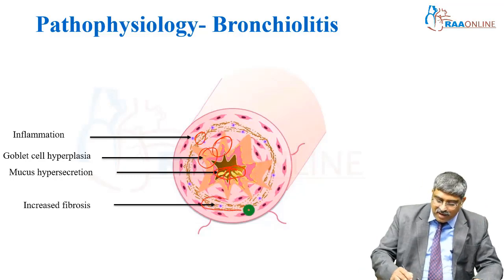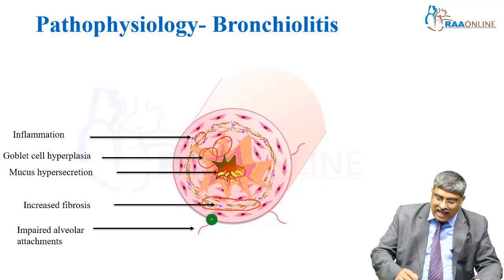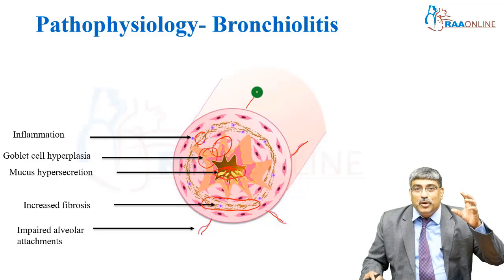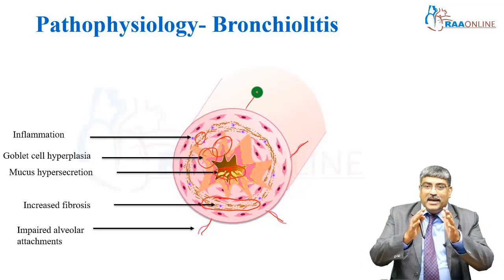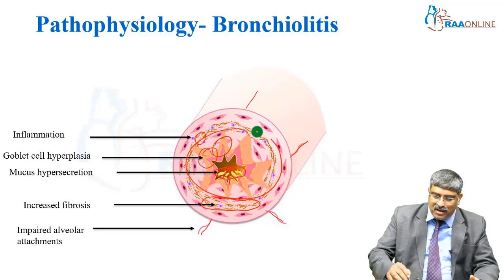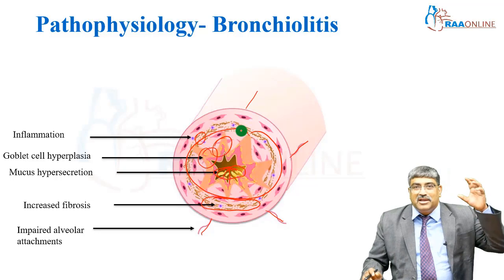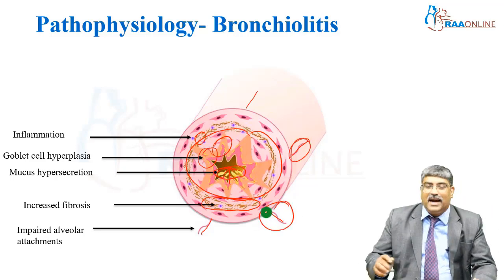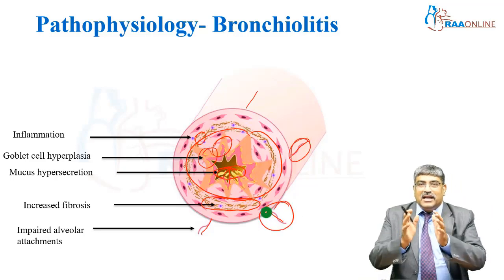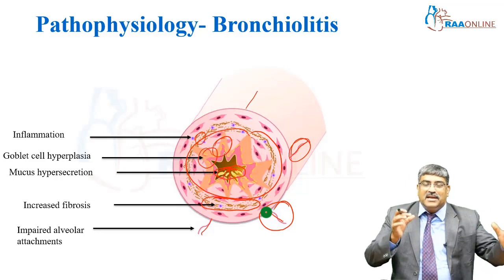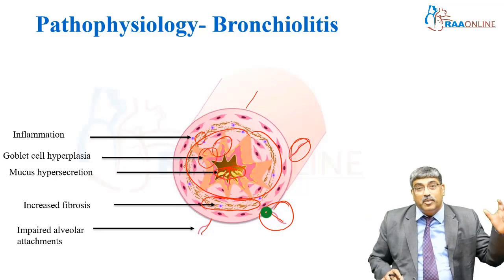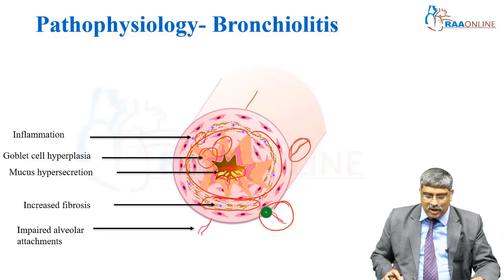There is increased fibrosis and loss of alveolar attachment. These alveolar attachments are normally required to maintain the patency of the airway. With chronic inflammation, this attachment gets impaired and does not maintain patency as required when air flows in, leading to further narrowing.